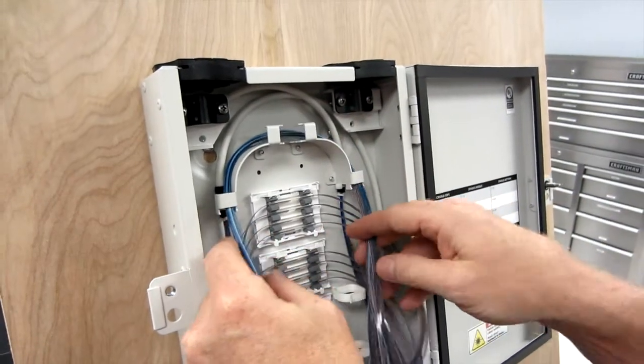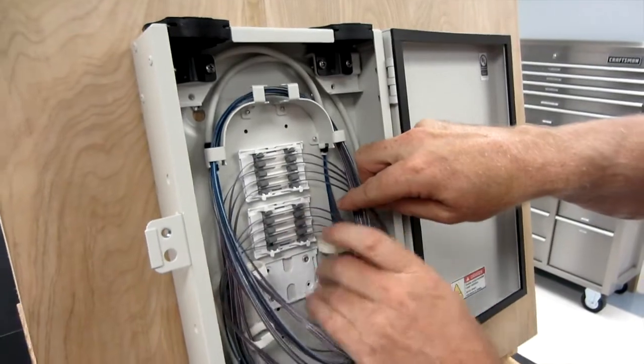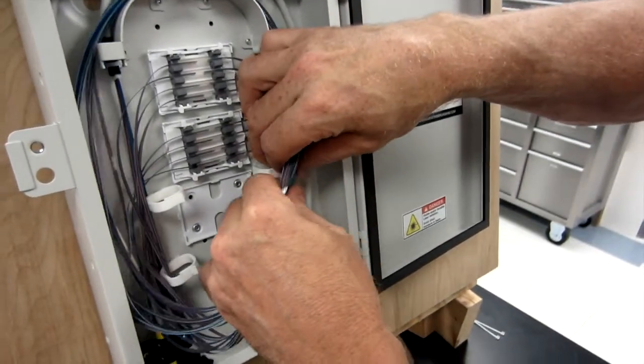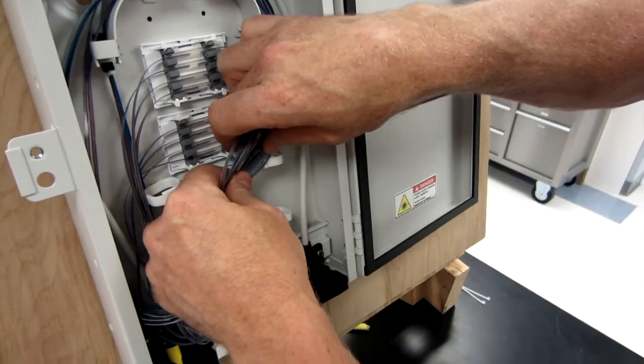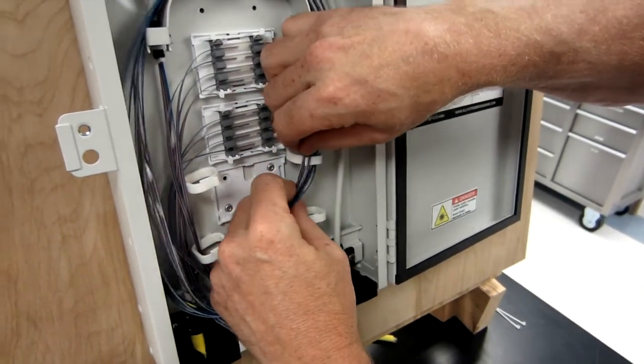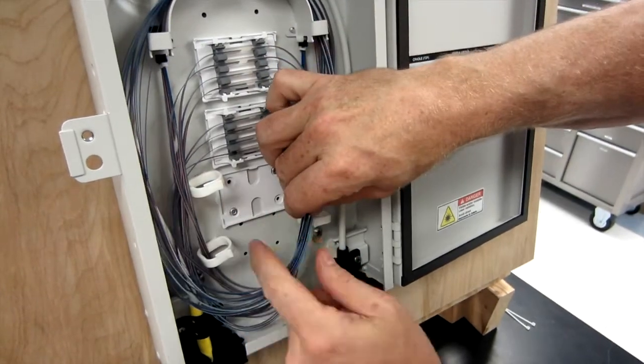Okay, then we're going to take all our ribbons on the right side and we're just going to lay them over and slide them into our fiber clips, first at the top and then at the bottom.